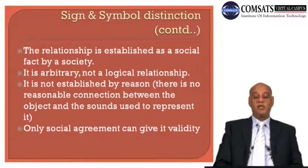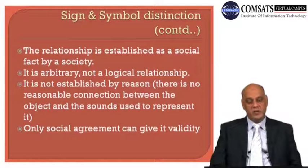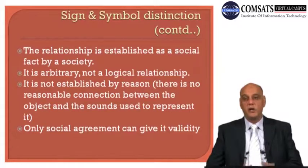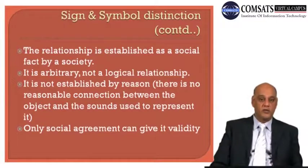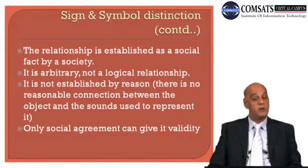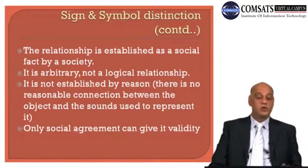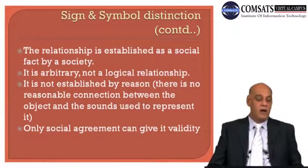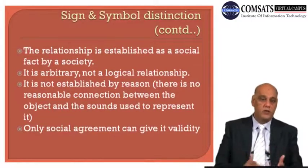Once the word has been given to the concept of the object and the relationship has been established, it doesn't change. This relationship is established as a social fact by society. The word 'tree' in English will always stand for the concept of the object with a trunk, leaves, and branches. That relationship has been established and will continue. It's arbitrary, not a logical relationship — there is no logic behind choosing a certain word for a certain object.